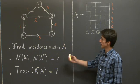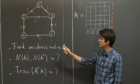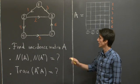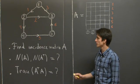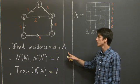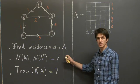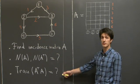We're given this very simple graph here with five nodes and six edges. We've already labeled them, and we've put directions on the edges. And we are asked to write down the incidence matrix A, and then to compute its kernel and the kernel of A transpose. And finally, we're asked to compute the trace of A transpose A.